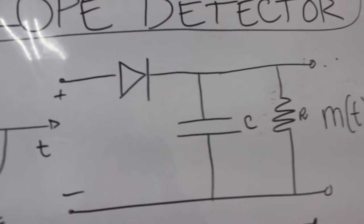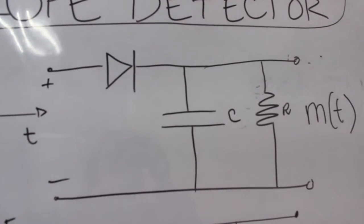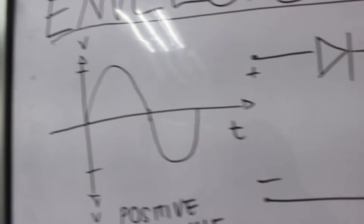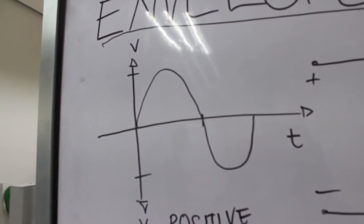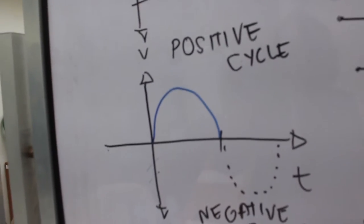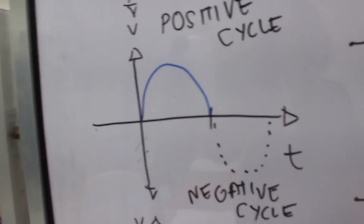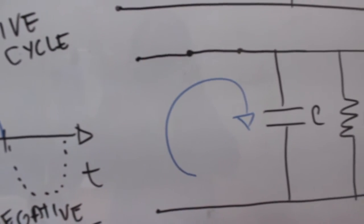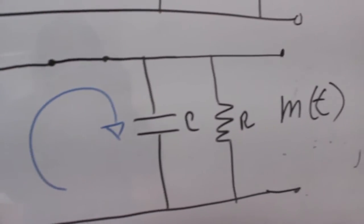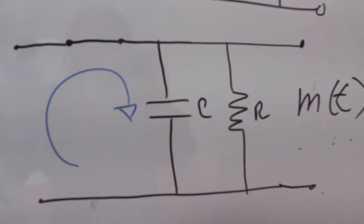An envelope detector consists of a diode and an RC circuit which is simply a low-pass filter. At the positive half cycle of the input signal, the diode conducts and the capacitor charges up to the peak value of the input signal.